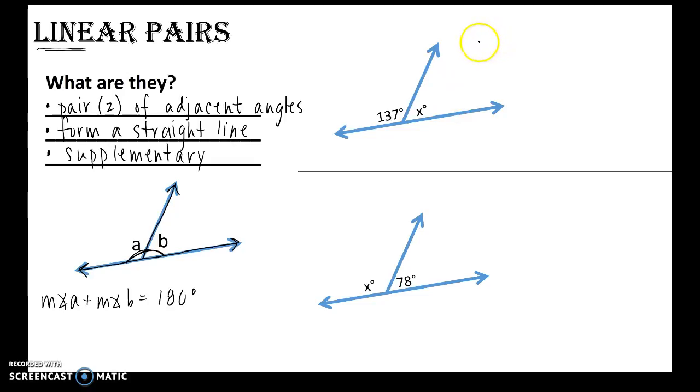All right, so for the first one to find x, I have 137 plus x will equal 180. Those two angles form a straight line. So subtracting 137 from both sides, x would equal 43 degrees. For the second one, x plus 78 equals 180. Subtracting 78 from both sides, we get 102 degrees. So these are simple uses of them where you have one angle measure and then the other one is just an x.